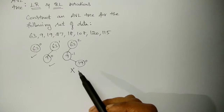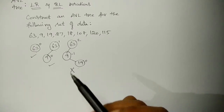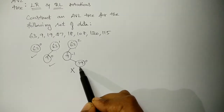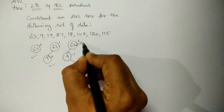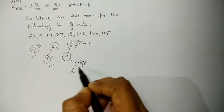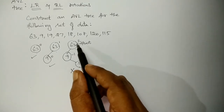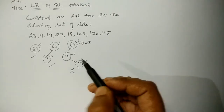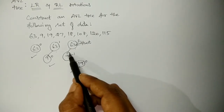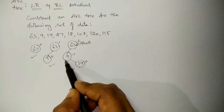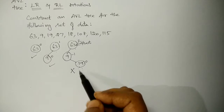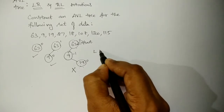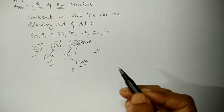I want to perform a rotation to make the tree balanced. The type of rotation is based on the pivot node and the position of the newly inserted data. 63 is the pivot node — the one nearest to the newly inserted data whose balance factor is not equal to 0, 1 or minus 1. From the pivot node, the node immediately next to it is called the child node and whatever comes next is a subtree. So 9 is a left child and 19 is in the right subtree — left child, right subtree — so we perform LR rotation.